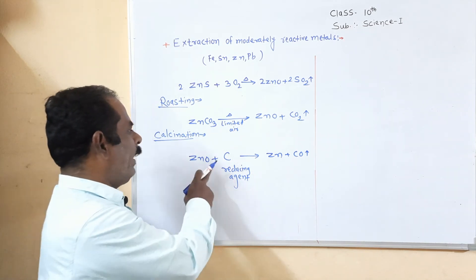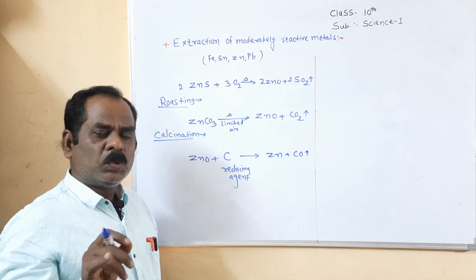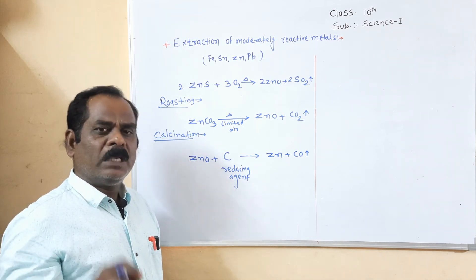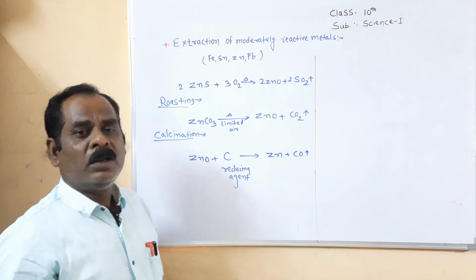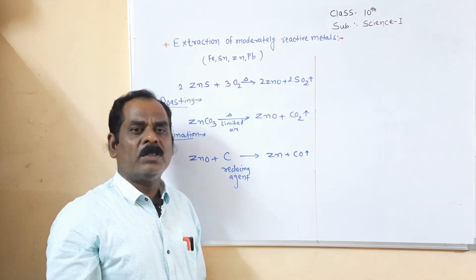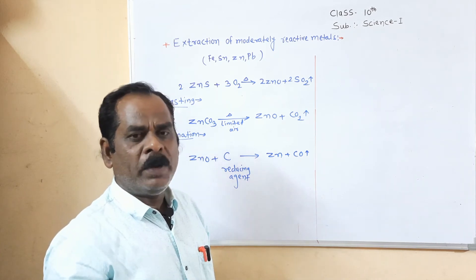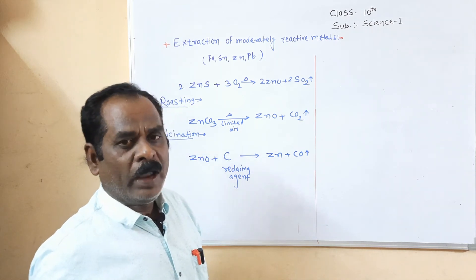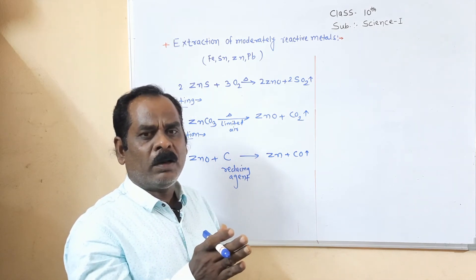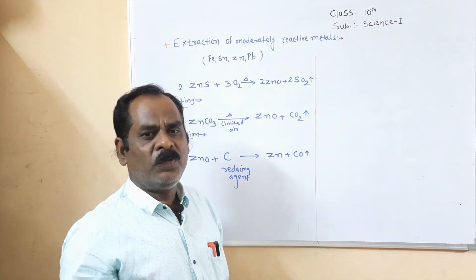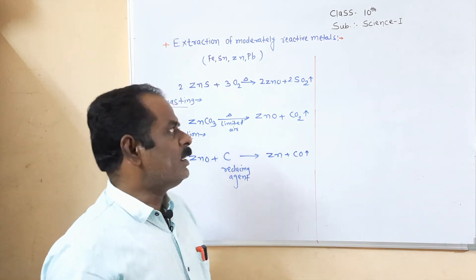Sometimes sodium, calcium, or aluminium are also used as reducing agents, because sodium, calcium, and aluminium are highly reactive metals. They have the ability to displace moderately reactive metals from their compounds. Therefore, aluminium is also used as an excellent reducing agent.